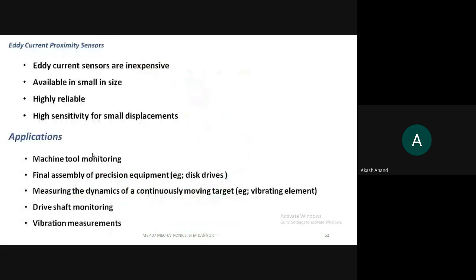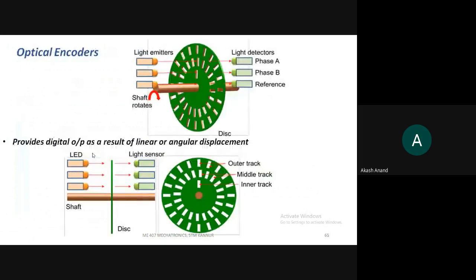The next type of proximity sensor is the optical encoder. Optical means light, and encoding means reading some sort of code. From the figure, you can see a coded disc mounted over a rotating shaft. On one side there is a light emitter — an LED — and at the other end there is a light detector.